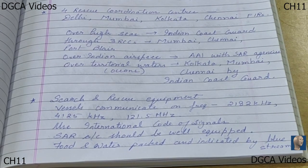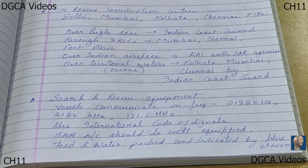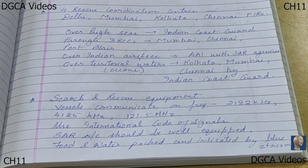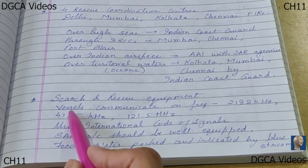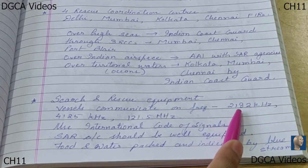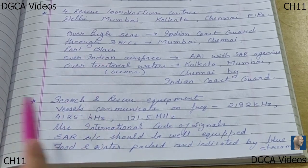Coming to search and rescue equipment — whenever a search and rescue operation is being held, the aircraft is equipped with instruments for easy communication on aeronautical distress frequencies, and devices for homing on distress frequencies. In maritime areas, vessels shall also be equipped to communicate. For maritime search and rescue operations, vessels operate on the distress frequencies of 2182 kHz, 4125 kHz, or 121.5 MHz.